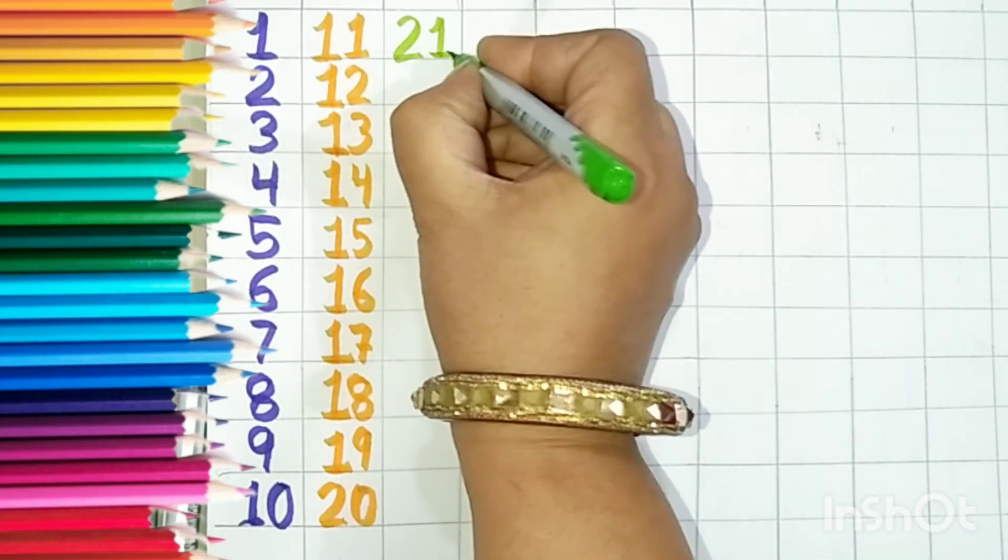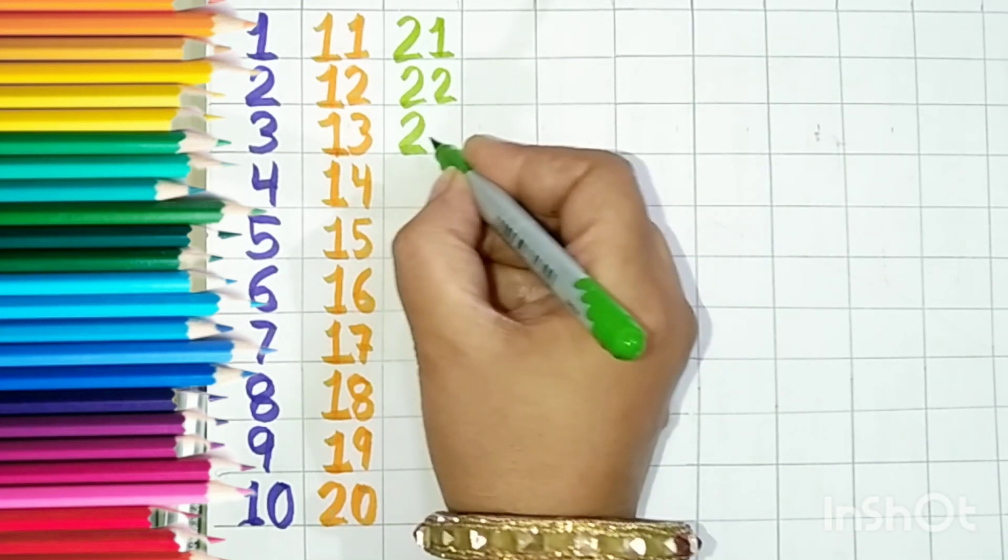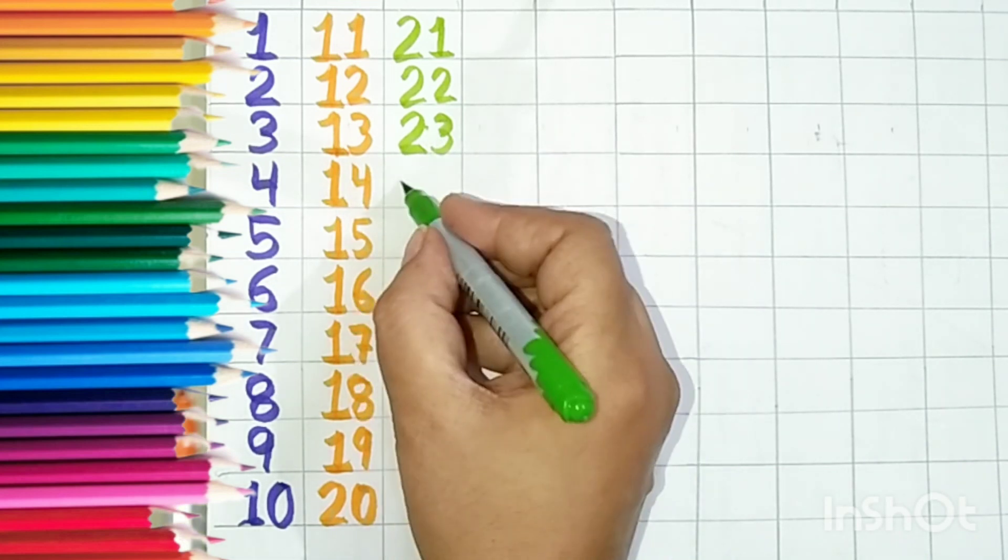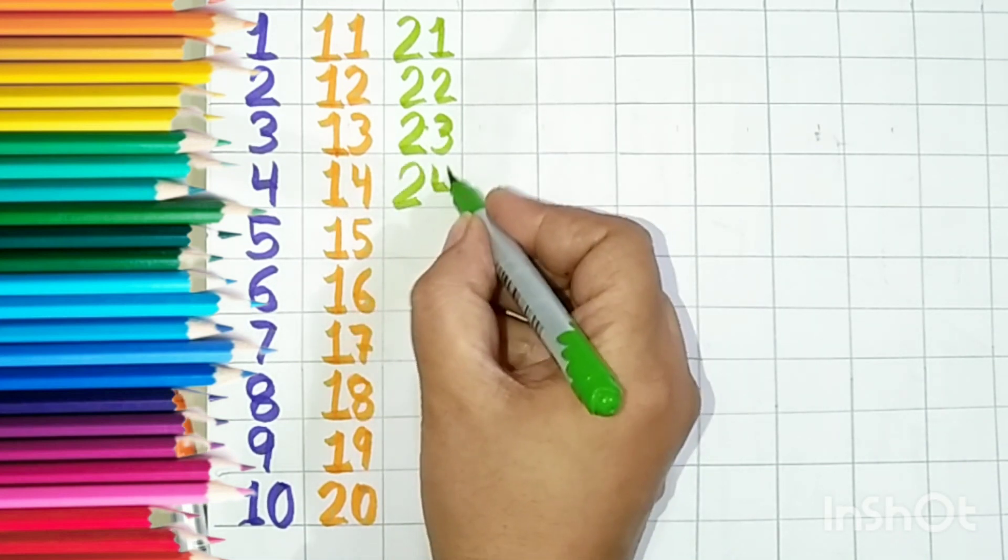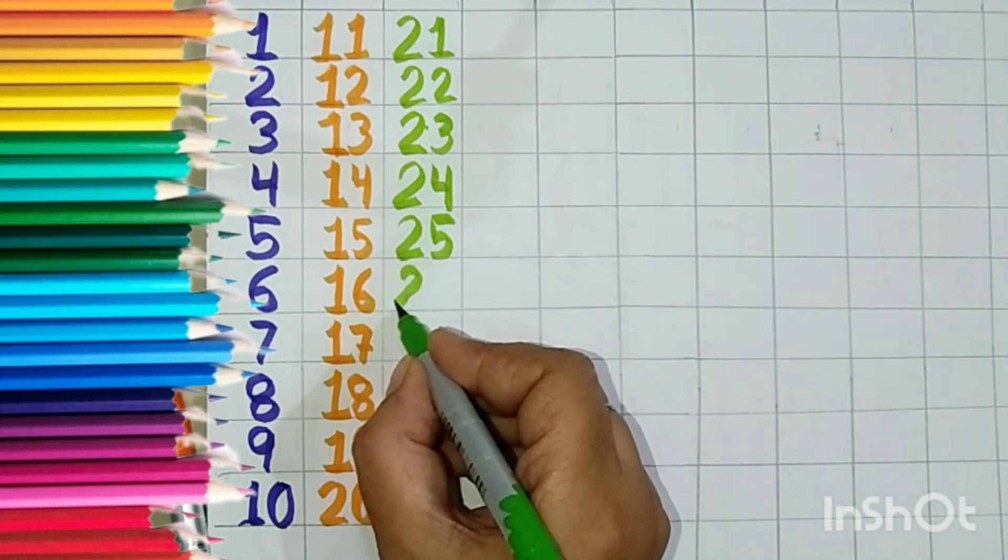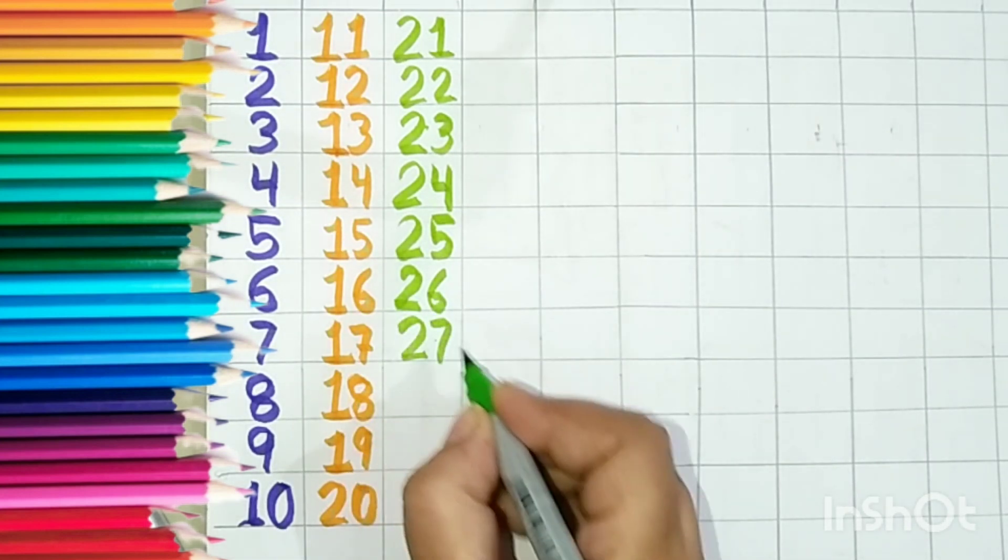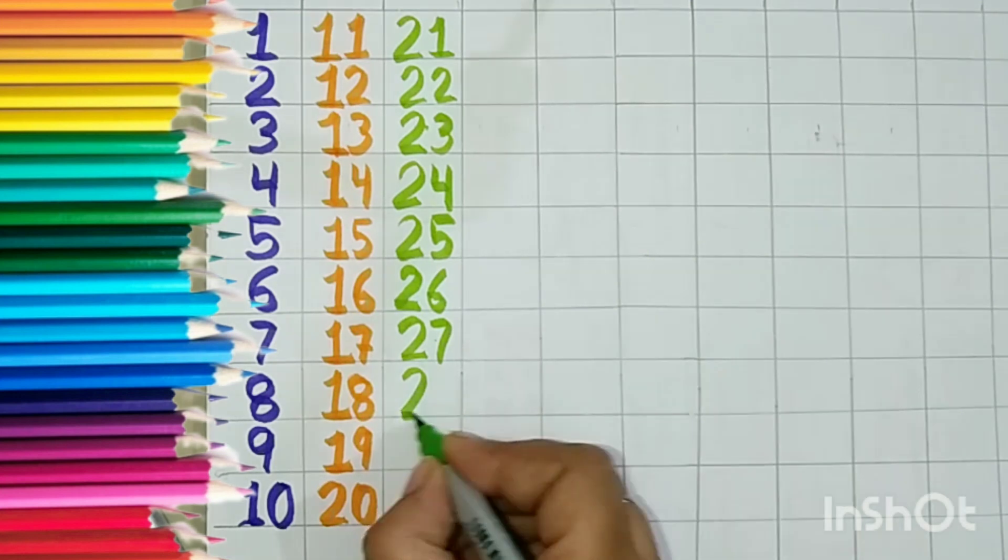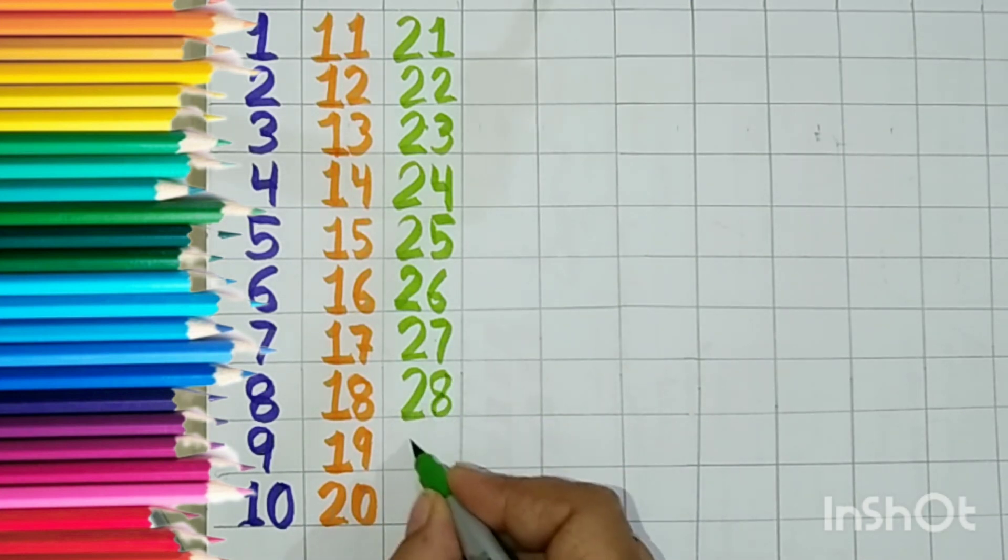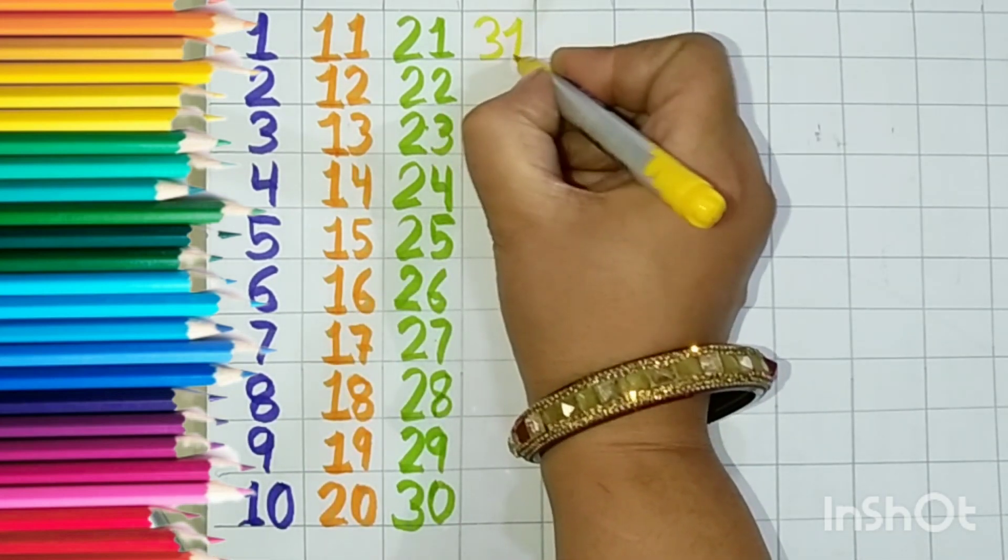2, 1, 21. 2, 2, 22. 2, 3, 23. 2, 4, 24. 2, 5, 25. 2, 6, 26. 2, 7, 27. 2, 8, 28. 29, 30.